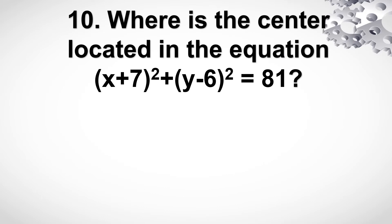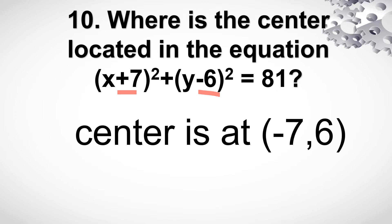Number 10. Where is the center located in the equation x plus 7 squared plus y minus 6 squared is equal to 81? So paano natin mahanap yung h and k — yung center? That's your h and your k. Palitan yung sign natin. So positive 7 magiging negative 7 at yung negative 6 magiging positive 6. So yung center nyo is (-7, 6).